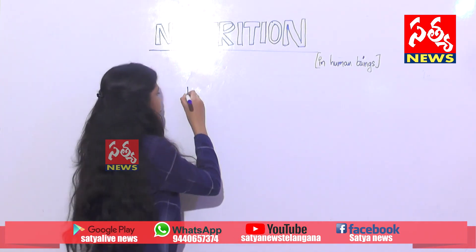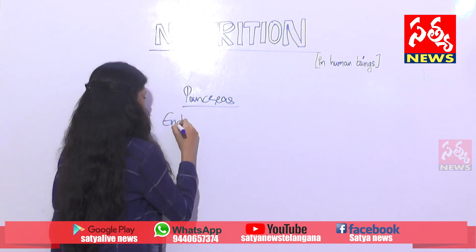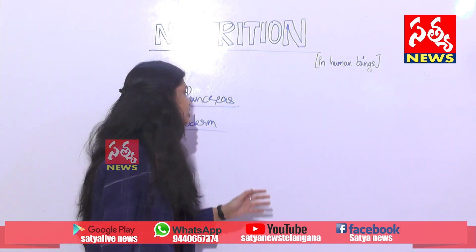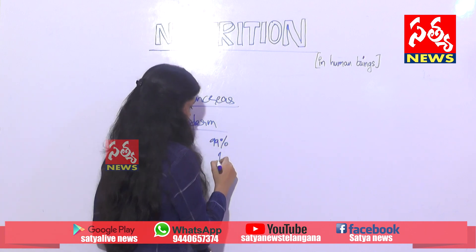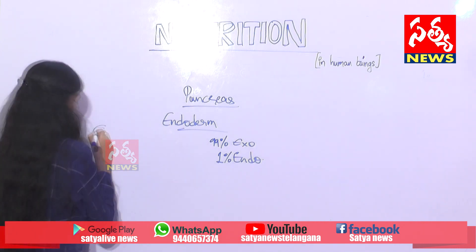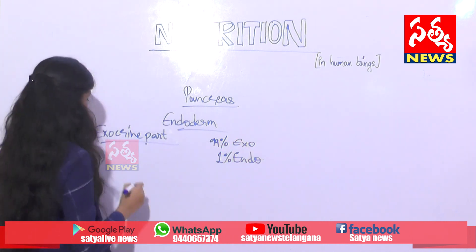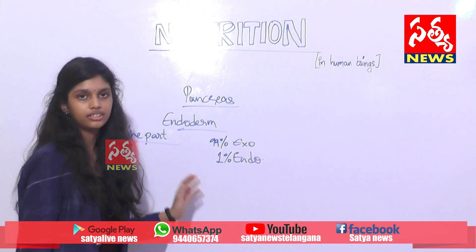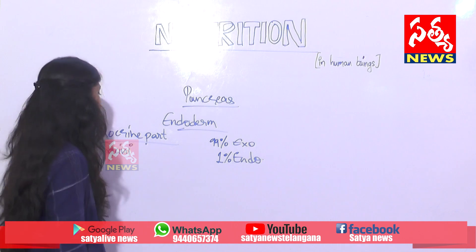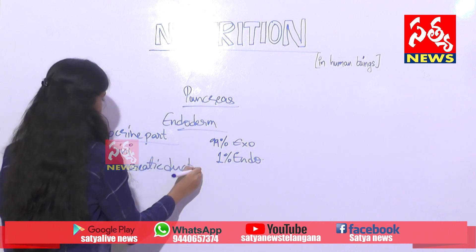Now let us know about the pancreas. This pancreas is of endodermal origin. The pancreas is both an exocrine and endocrine gland - 99 percent of it is exocrine and one percent is endocrine. The pancreas contains a group of cells called acini, which are the secretory cells that secrete the pancreatic juice. Each acinus contains a pancreatic ductule which together form the common pancreatic duct, called the duct of Wirsang.